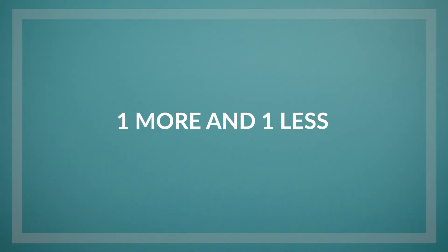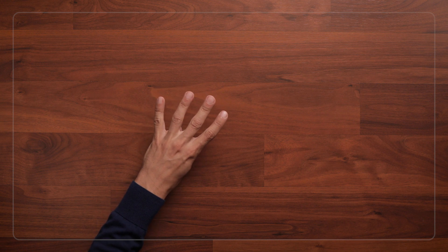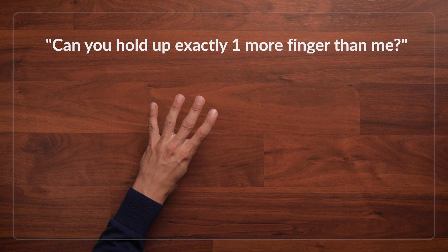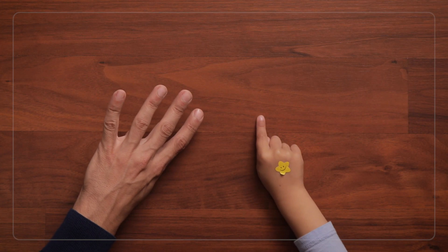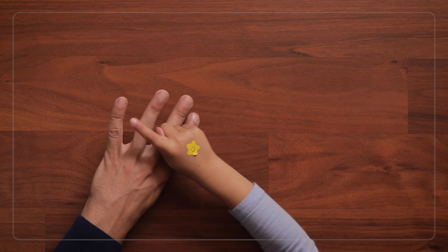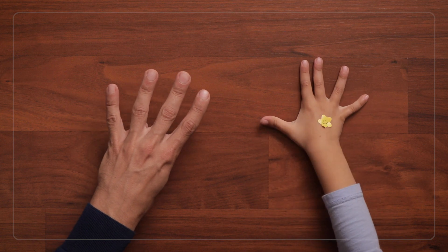Then, for more of a challenge, we can play that if I hold up, say, 4 fingers like this. Once they say 4 fingers, I'll ask, Now can you hold up exactly 1 more finger than me? And to do this, they might start out at 1 and count all the way up to 4 before going that 1 more to 5. Or they might start right at 4 and then count 1 more to 5.